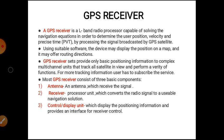The GPS receiver is an L-band radio processor capable of solving the navigation equation to determine the user's position, velocity, and precise time — i.e. PVT — by processing signals broadcast by GPS satellites. Using suitable software, the device may display the position on a map and offer routing directions. A GPS receiver set can range from a basic positioning unit to a complex multi-channel unit that tracks all satellites in view and performs a variety of functions. For more tracking information, the user has to subscribe to additional services.